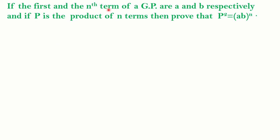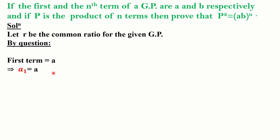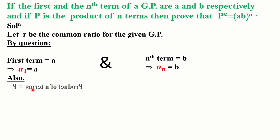If the first and the nth term of a GP are a and b respectively, and if P is the product of n terms, then prove that P squared is equal to (a × b) whole power n. Let r be the common ratio for the given GP. The first term a₁ = a, the nth term aₙ = b, and P is the product of n terms.